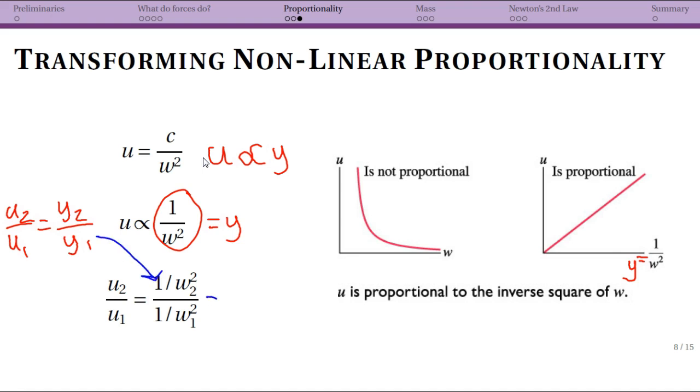Now in this case, I could simplify this a little bit since each of these is a fraction and I can put w two squared on the bottom, w one squared on the top. So now it's simplified and this ratio is held true.